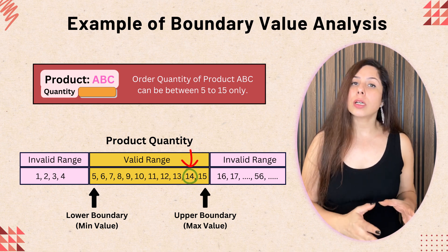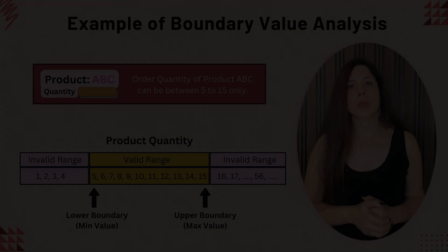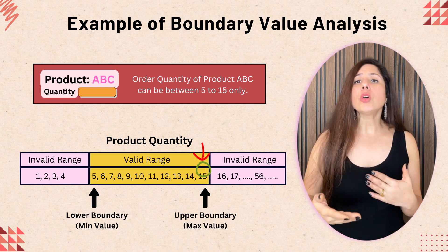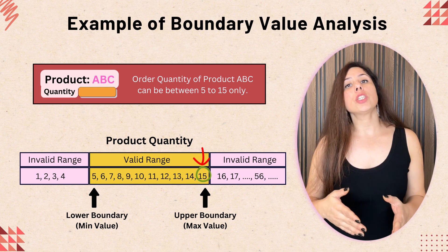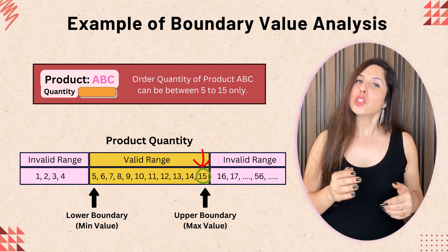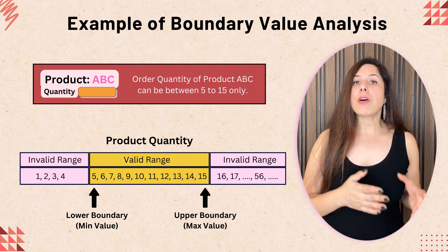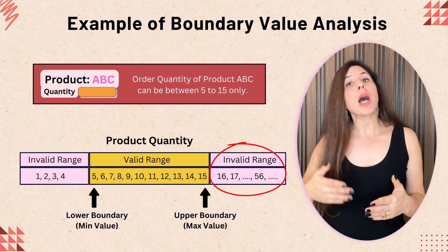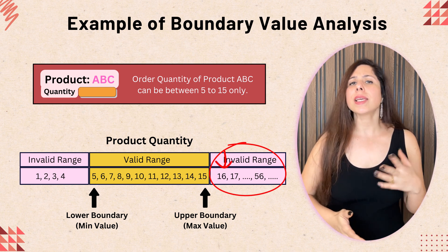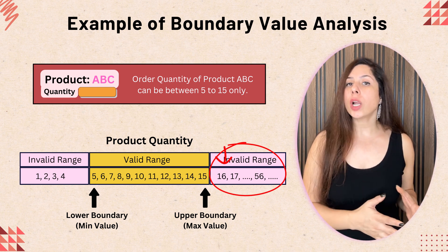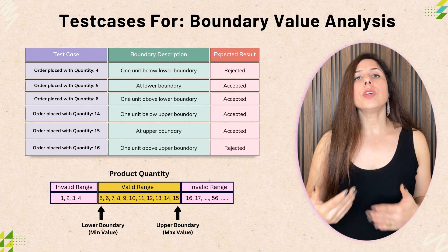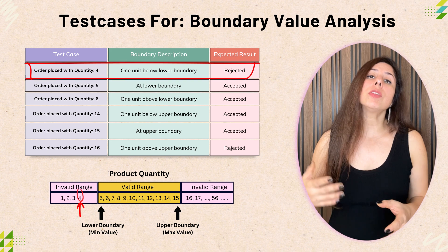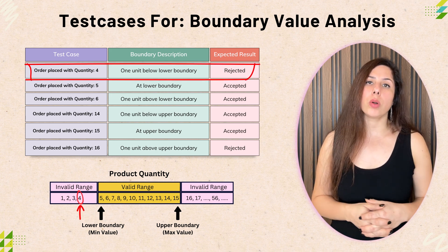Similarly, near the upper boundary, if the user tries to place an order with a quantity of 14 — that is one less than the upper boundary — the order should be accepted. Next, we test the upper boundary: if the user tries to place an order with a quantity of 15, the order should be accepted. Finally, if the user tries to place an order with a quantity above the maximum boundary, like 16 or 17, the order should be rejected. Through this approach we create six key test cases.